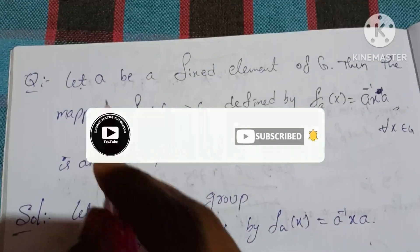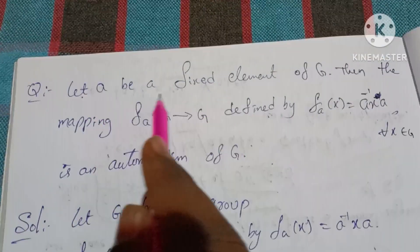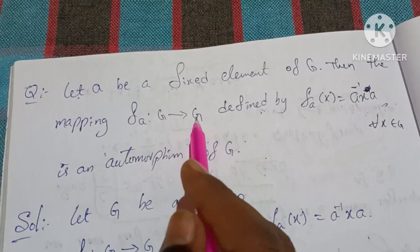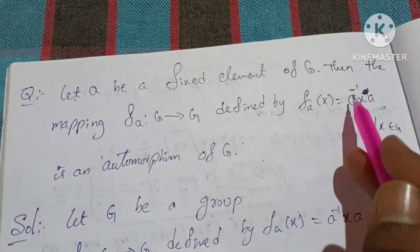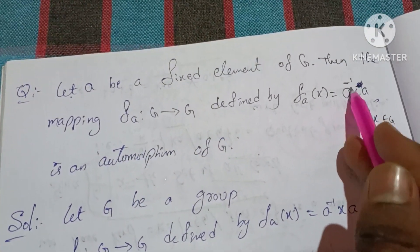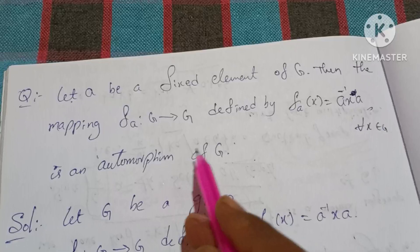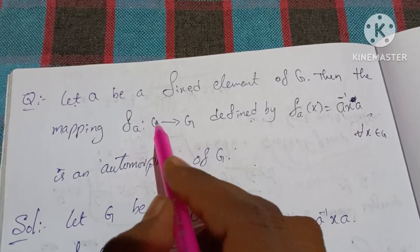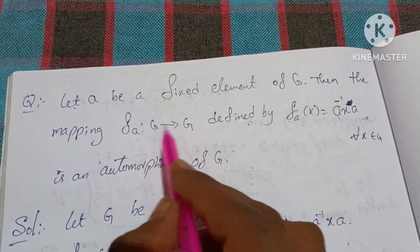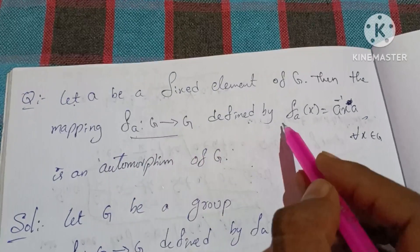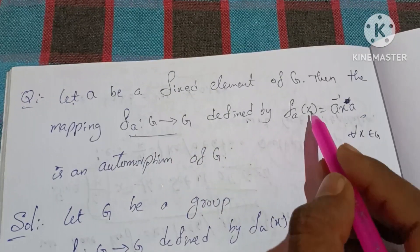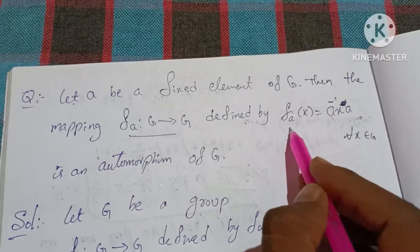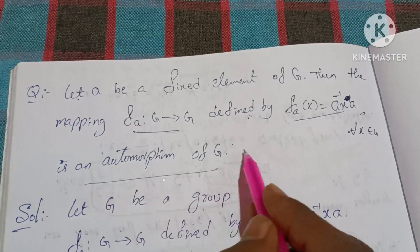Let a be a fixed element of G. Then the mapping f_a from G to G, defined by f_a(x) equal to a inverse x a, is an automorphism of G.